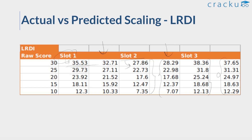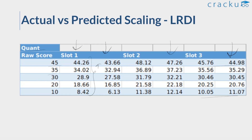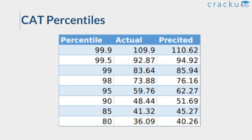For the Quant section, these are the actual scaled scores and these were our predicted scores. In Slot 1, the scaled scores were slightly higher than our predictions. For Slot 2, predictions were again close to the actual scaled scores. Similarly in Slot 3, there is no big difference. These were the actual versus predicted scaling results for the Quant section.